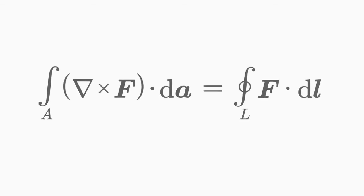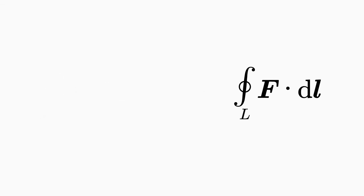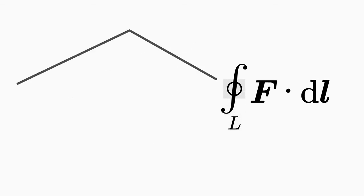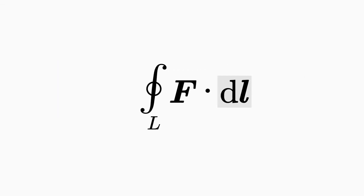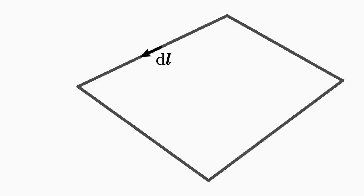Now consider the second important theorem necessary for understanding the Maxwell equations: the curl integral theorem. If you understand the divergence integral theorem, the curl integral theorem should not be totally cryptic to you. You already know the vector field F, the scalar product, the nabla operator, and the dA element. On the right-hand side of the equation, L is a line in space. The circle around the integral sign indicates that this line must be closed — it should form a loop whose beginning and end are connected. The dL is an infinitesimal line element of the loop, an infinitely small piece of the line. The dL element is a vector with a magnitude equal to the length of that line piece.